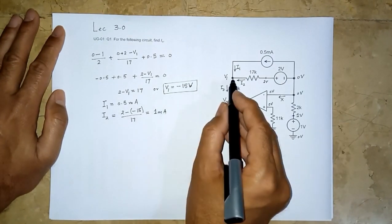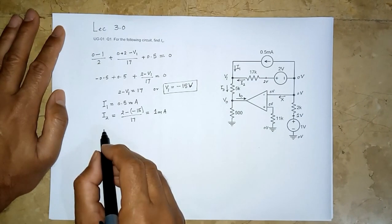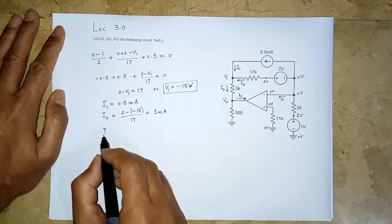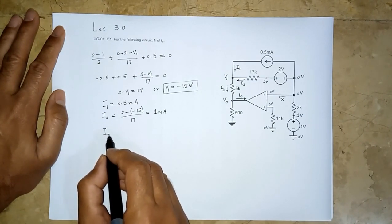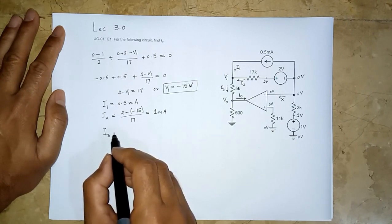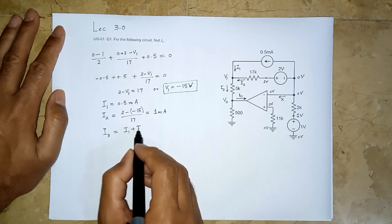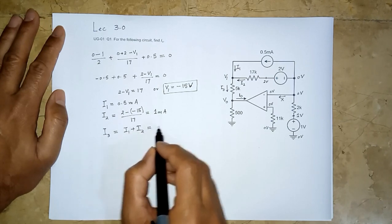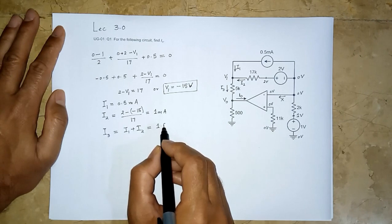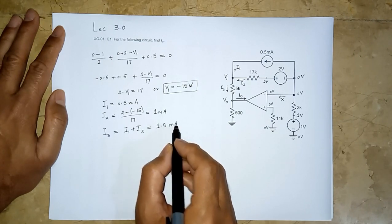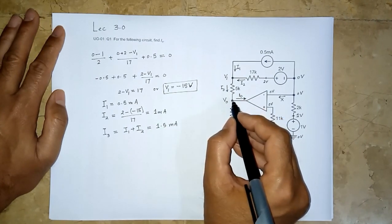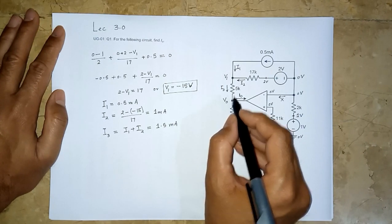So by applying KCL at this node, we can very easily see that in the directions that we have used to mark for i1, i2, and i3, i3 is equal to i1 plus i2. i3 is equal to 1.5 milliampere.